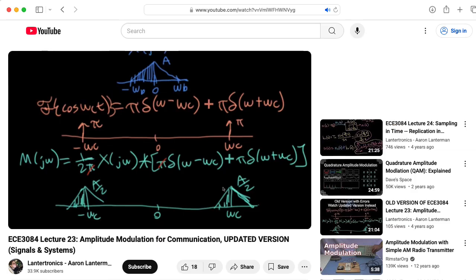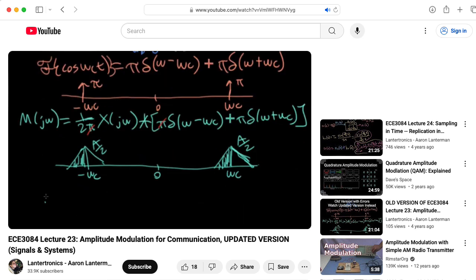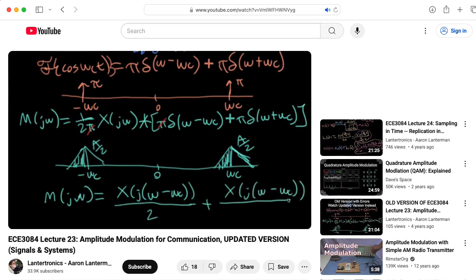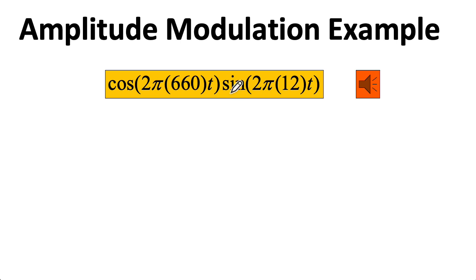In my EC3084 lecture series, I have an entire lecture on amplitude modulation, where I use the machinery of the continuous time Fourier transform. We don't cover the continuous time Fourier transform in 2026. So in this class, we're sticking with simple sinusoids. This formula is basically the same as the one we just looked at. To spice things up, we put a sine here instead of a cosine. But this is going to sound the same.